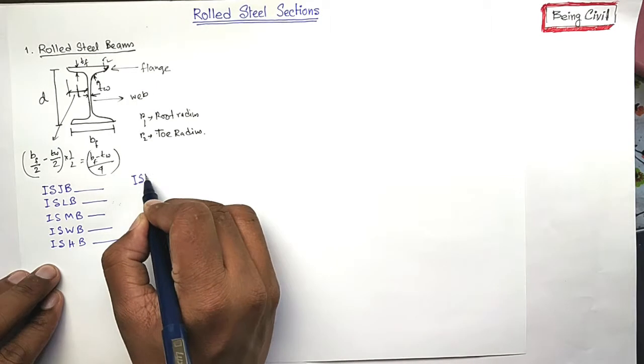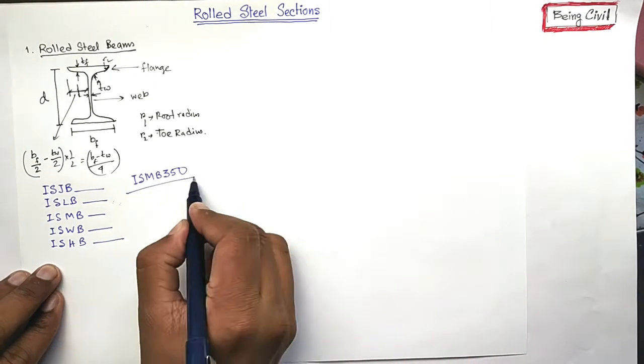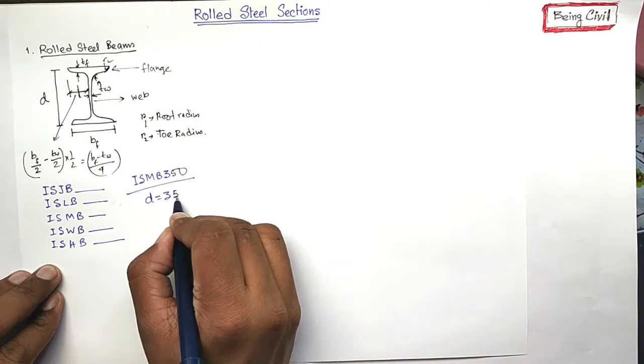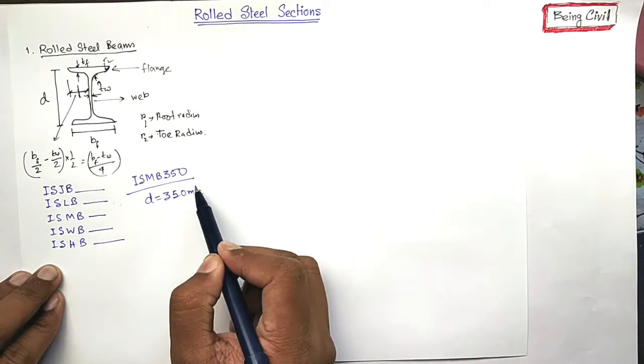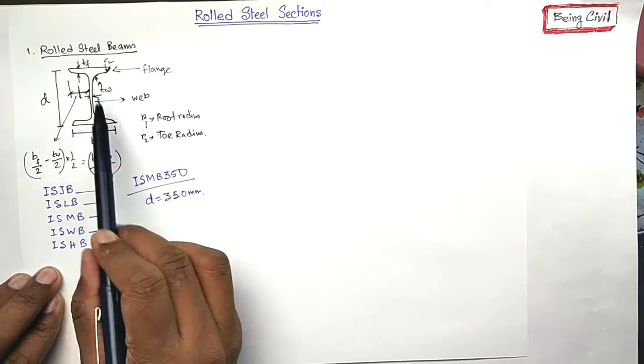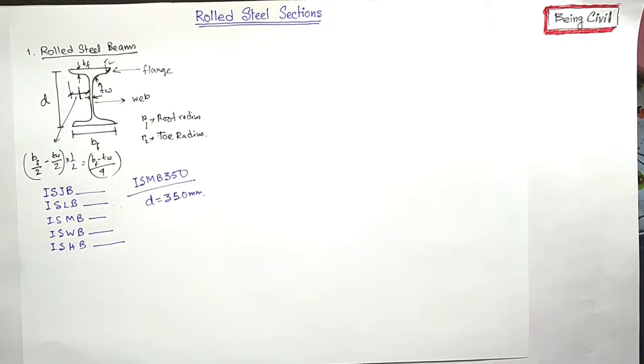Suppose your beam is ISMB 350. It means the depth of the beam is 350 millimeter. And if you know the depth of the beam, then all the properties of these beams, BF, TW, TF, all can be found from the handbook SP6. Let's have a look at the handbook.